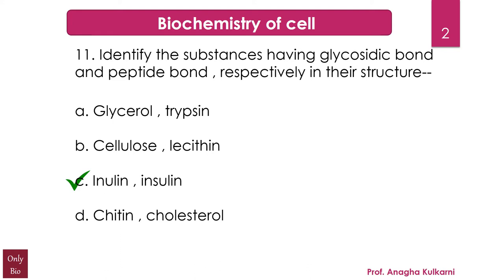Option B is cellulose and lecithin. Cellulose is a polysaccharide consisting of several hundreds or thousands of glucose units, and it's an important structural component of the cell wall of green plants and many algae. Lecithin is a yellowish-brown fatty substance and is said to be amphiphilic.